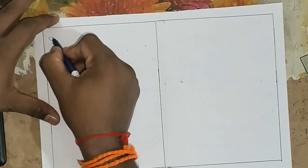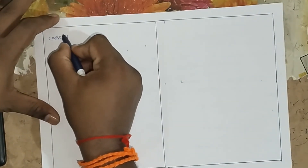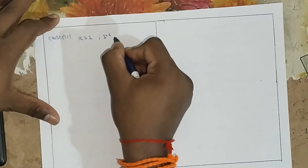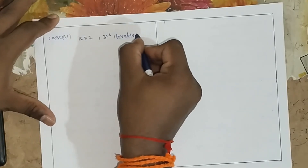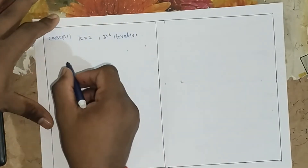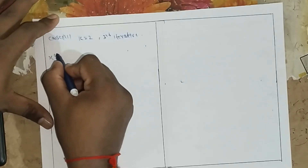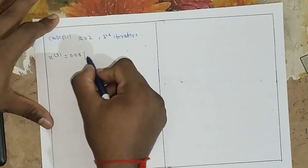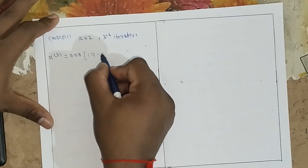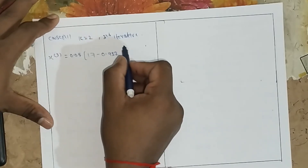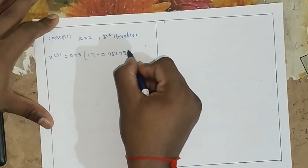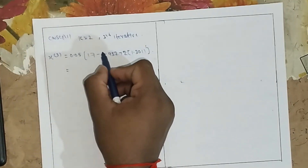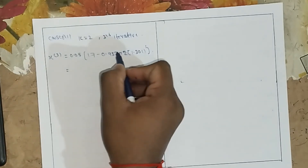Now we move to the third iteration, case 3, with k equals 2. x(3) equals 0.05 into (17 minus y(2) of 1.032 plus 2 into z(2) of 1.301).